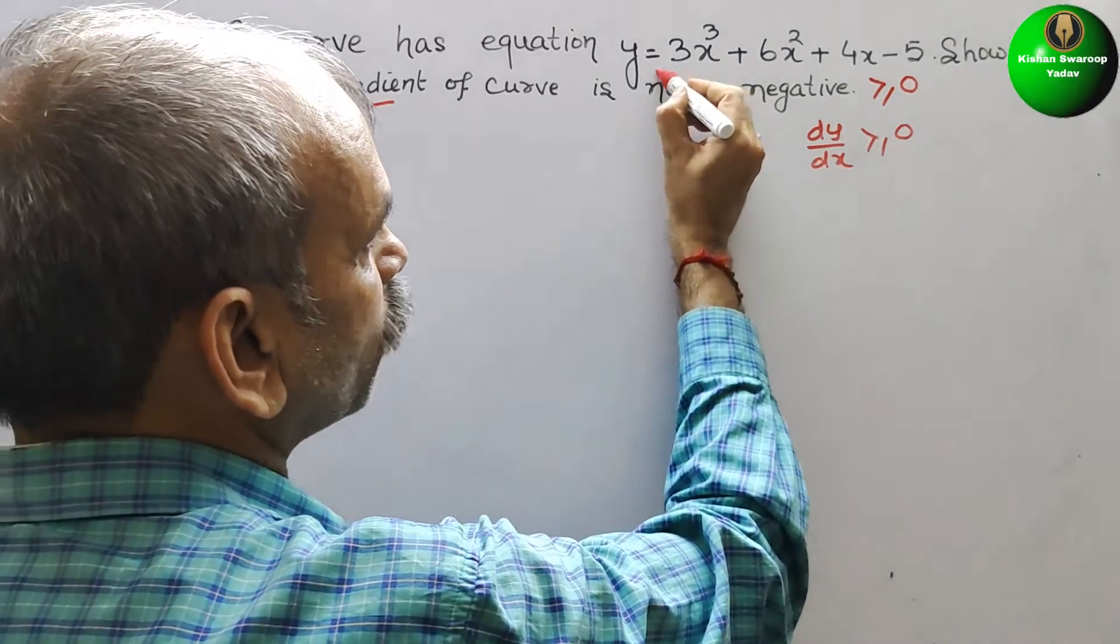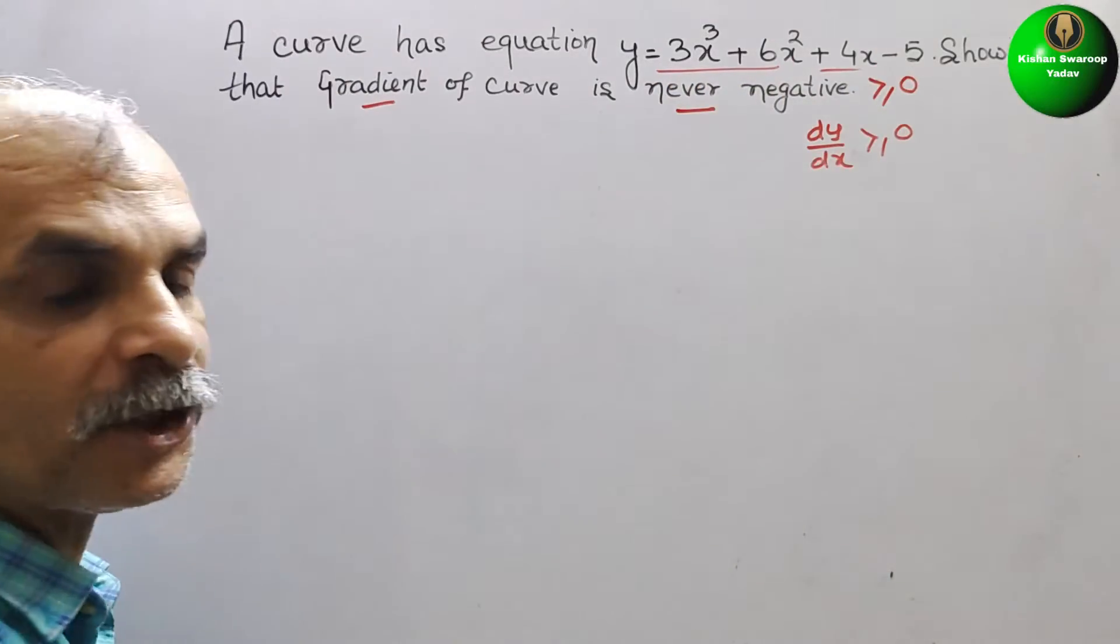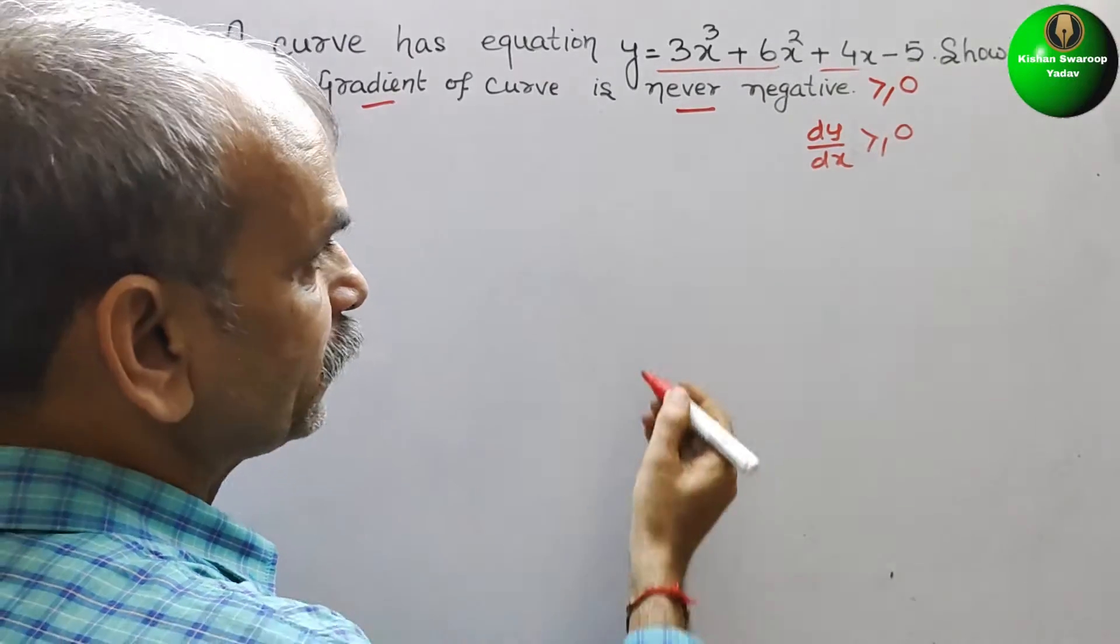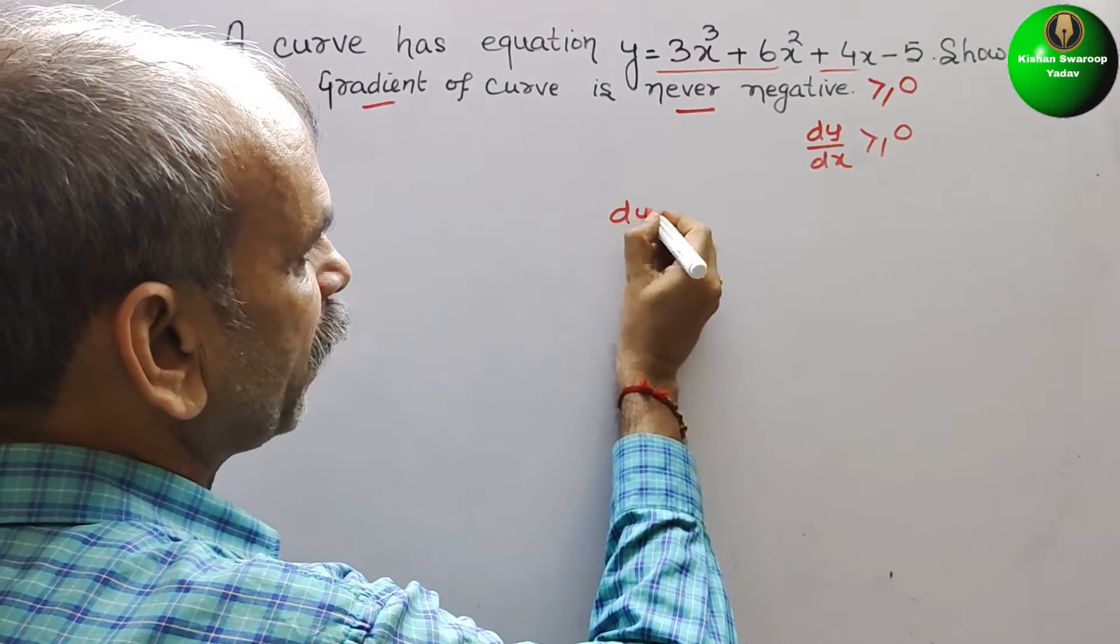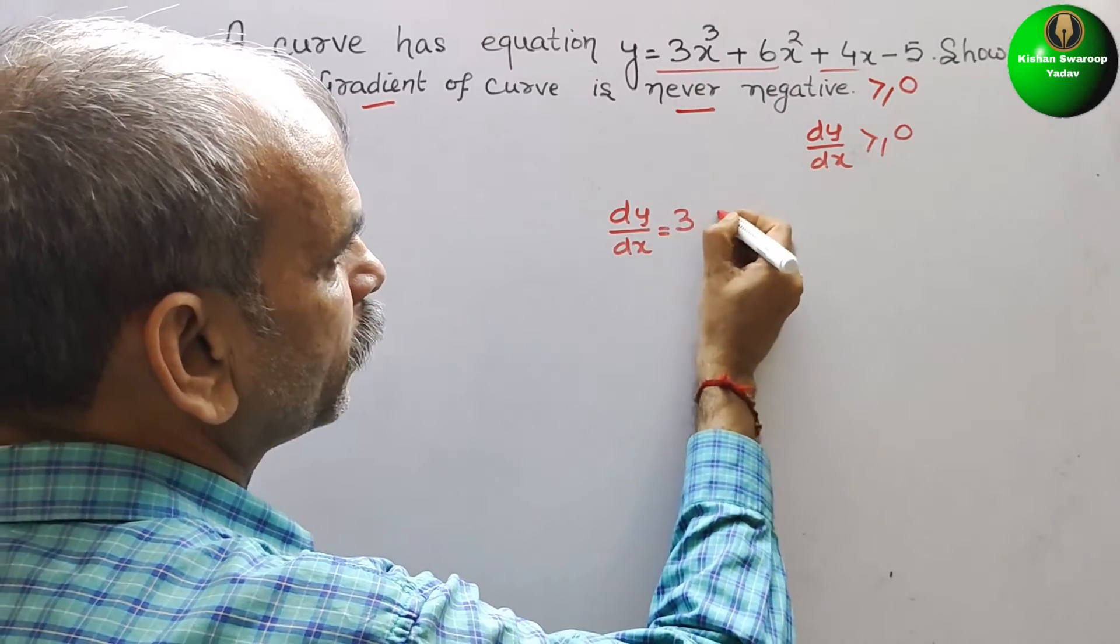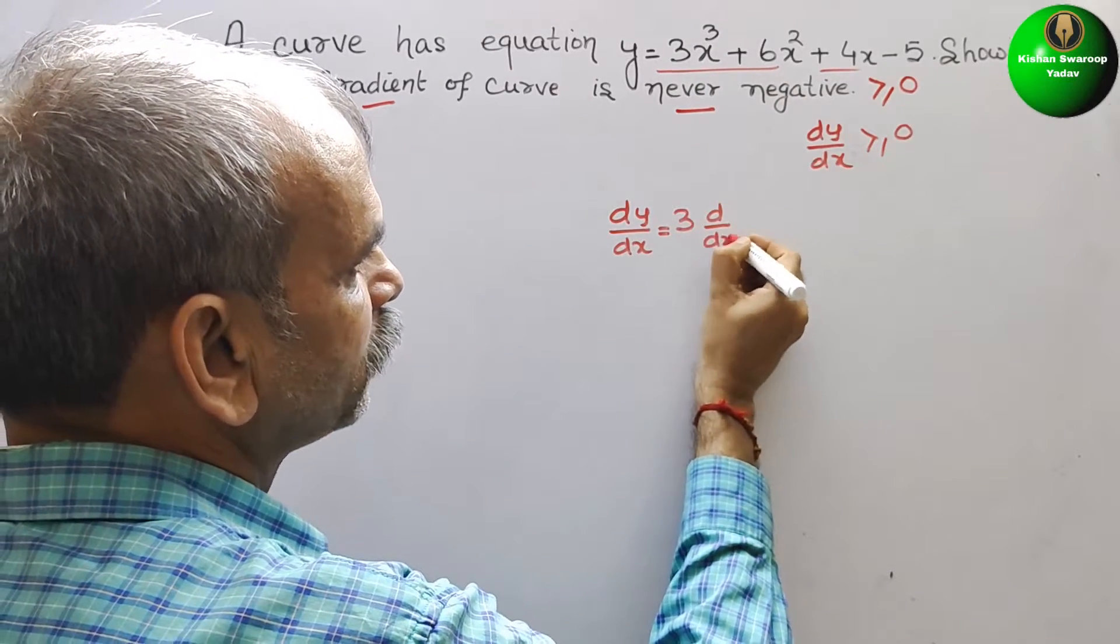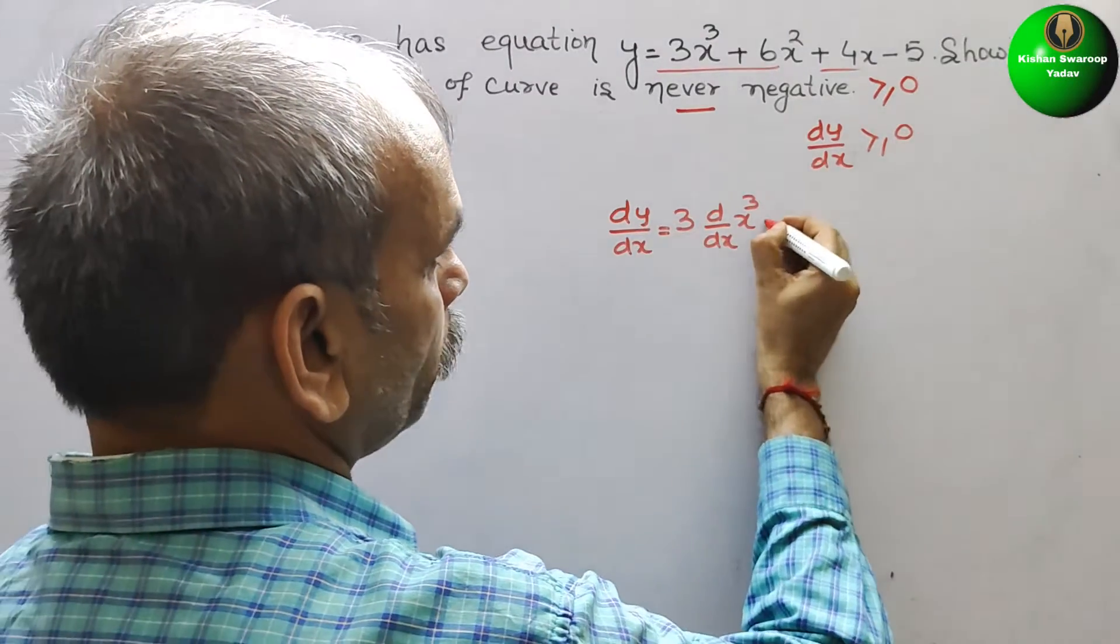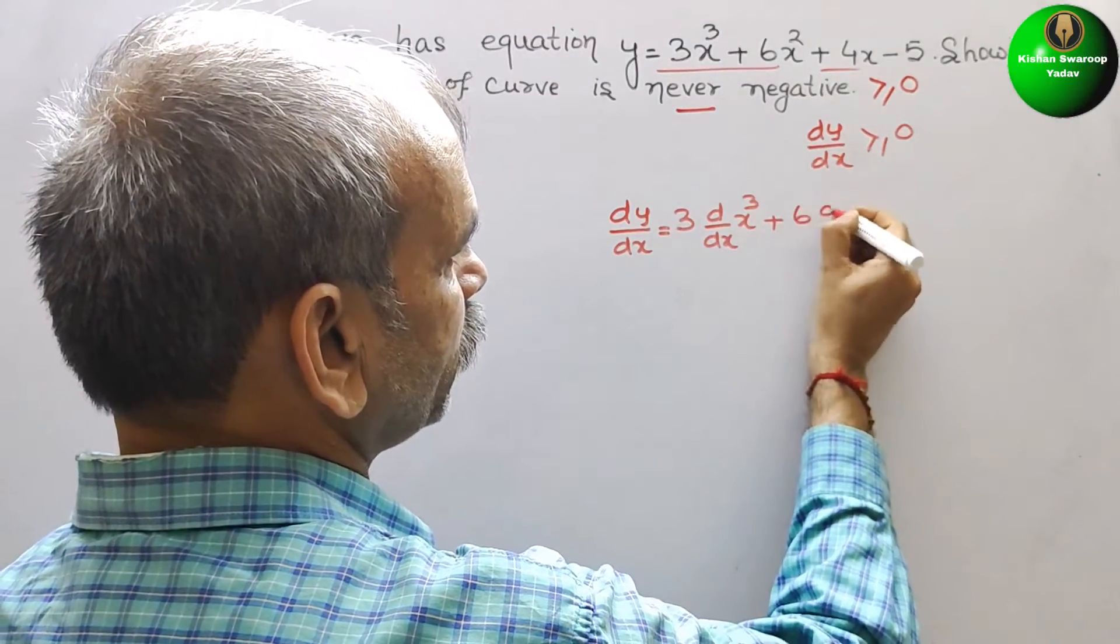That means we have to find the differentiation. So we will go for that. dy/dx equals 3(d/dx of x³) + 6(d/dx of x²)